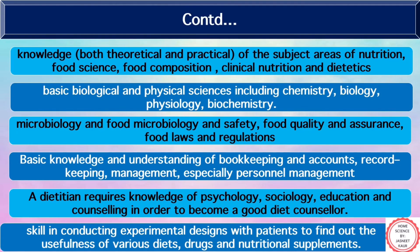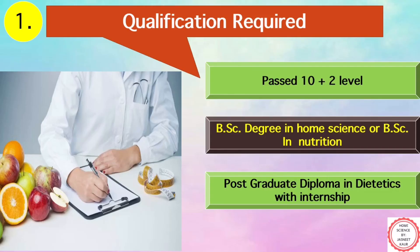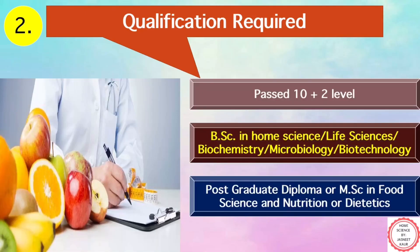Let's understand what qualification is required to become a clinical nutritionist. Initially you need to clear your 12th class and enroll in a BSc degree in Home Science or BSc in Nutrition, afterwards pursuing a PG Diploma in Dietetics with relevant internship at a hospital or recognized clinic. The second option is to pursue BSc in Home Science, Life Science, Biochemistry, Microbiology, or Biotechnology after 12th, and then pursue a PG Diploma or MSc in Food Science and Nutrition or Dietetics. Apart from these, certain open universities also provide diploma or certificate courses in this field.